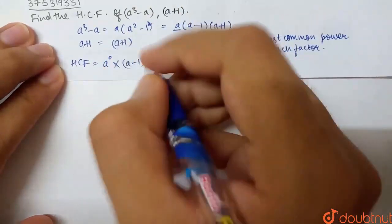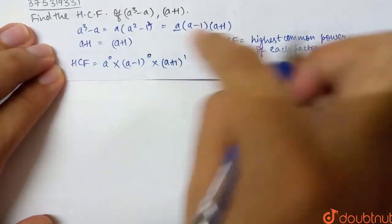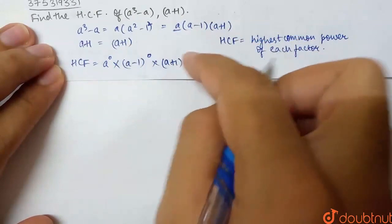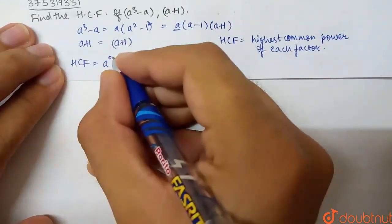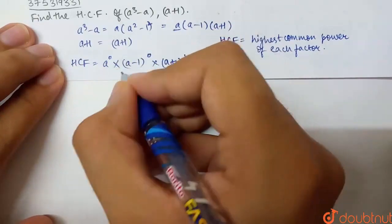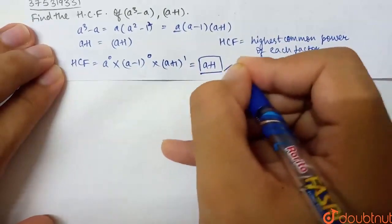So, here is (a+1). Here is (a+1). What do we have here? (a+1) is to the power of 1. That means the highest power which is common is (a+1) to the power of 1, or simply (a+1). So, this is HCF. And anything to the power of 0 is basically 1. So, (a-1)⁰ is also 1 into (a+1). So, HCF is basically (a+1).